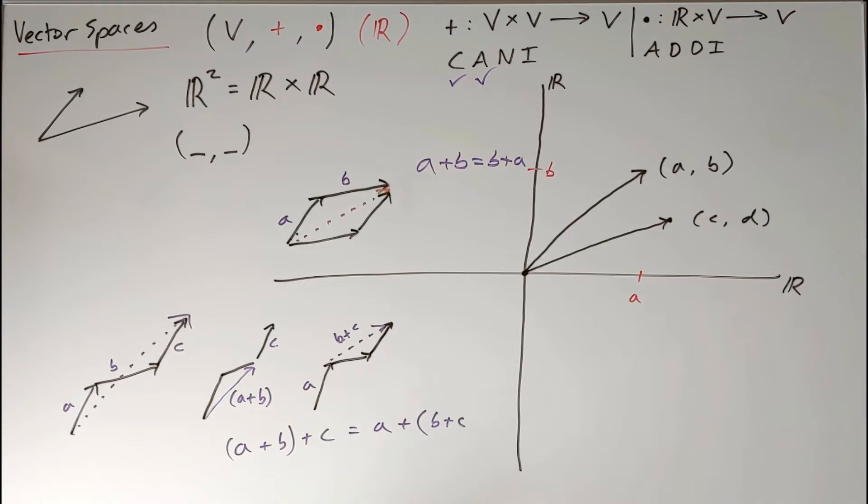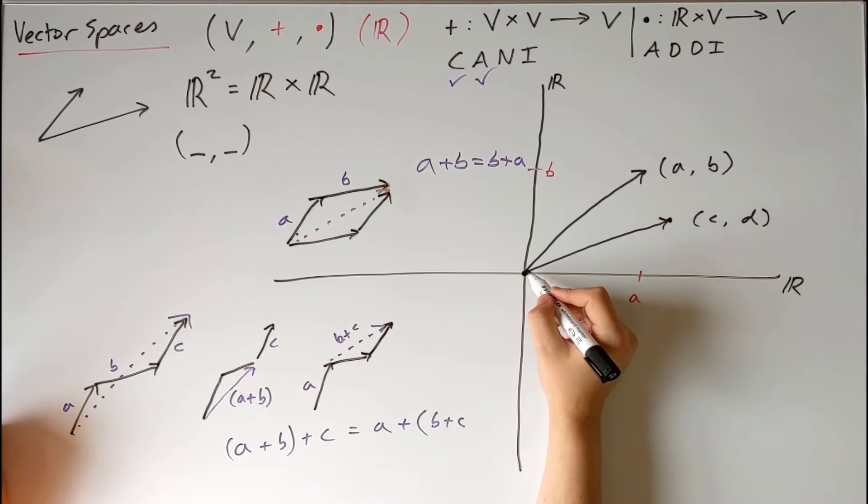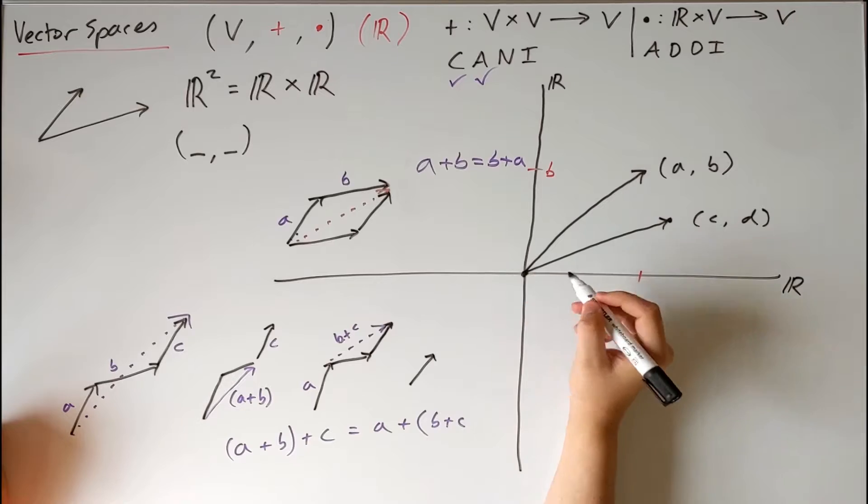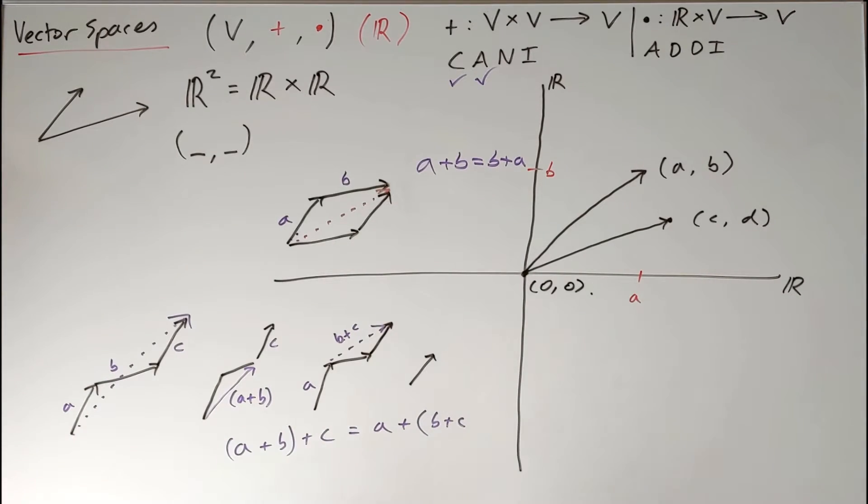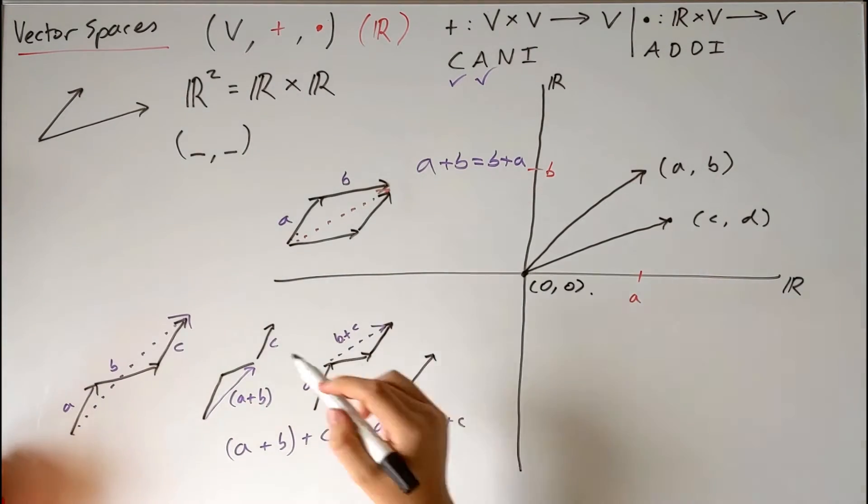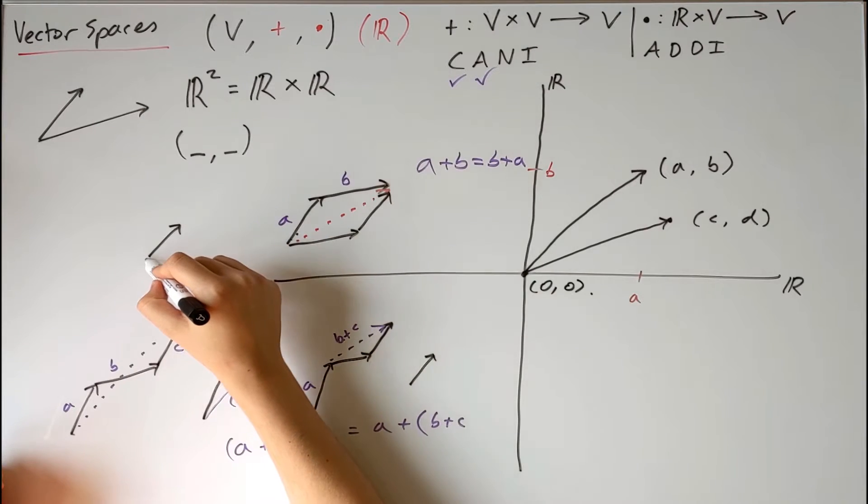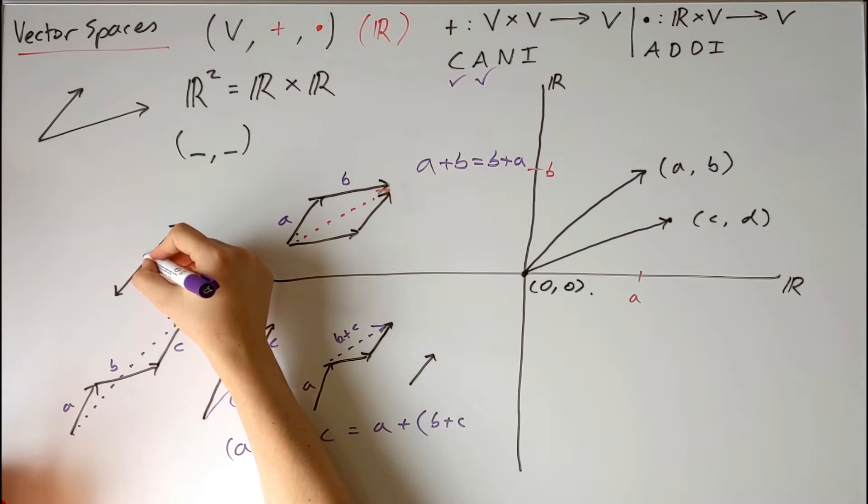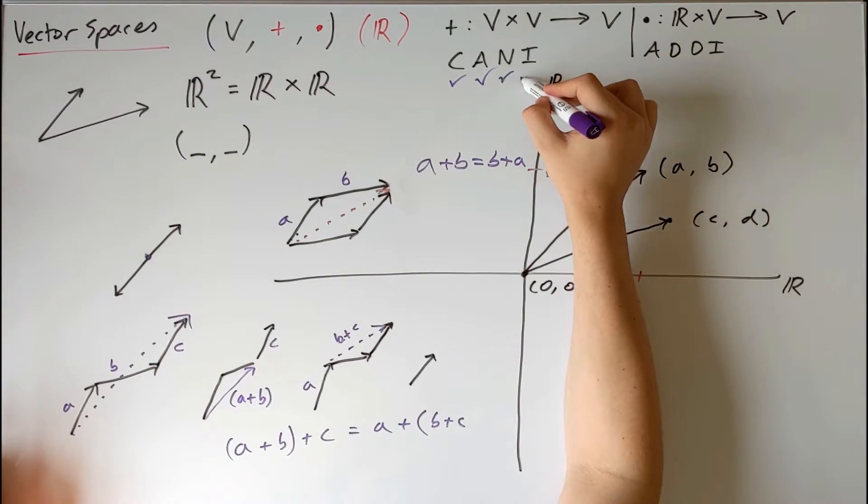And now the neutral element is fairly trivial, we just simply add nothing to the vector, so we can add the zero point. And then finally inverse, we simply just add the vector going in the exact opposite direction, which sums up to zero. So we have a neutral and we have an inverse.